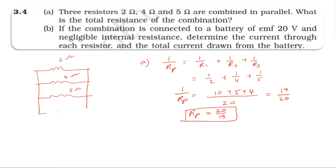Now for part b, the combination is connected to a battery of EMF 20 volt. First resistance has current I1, second has current I2, third has current I3. In parallel, potential difference is the same across each resistor.